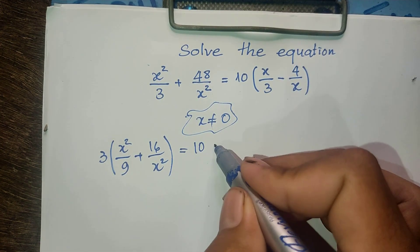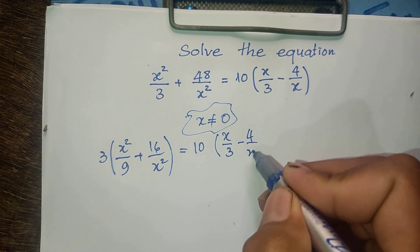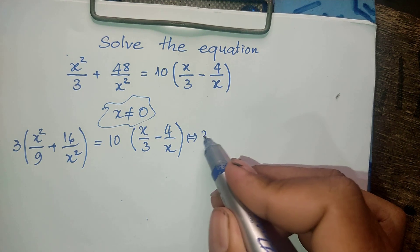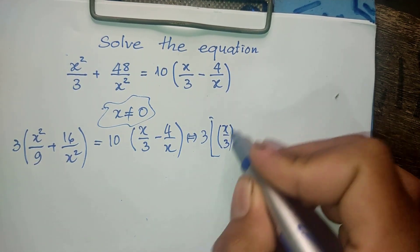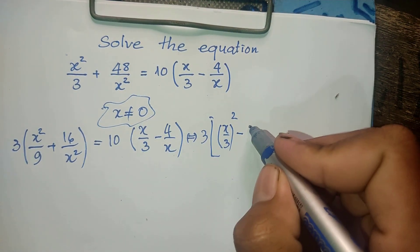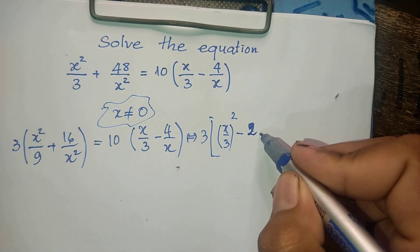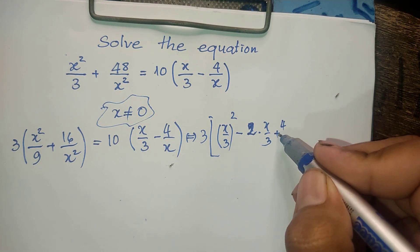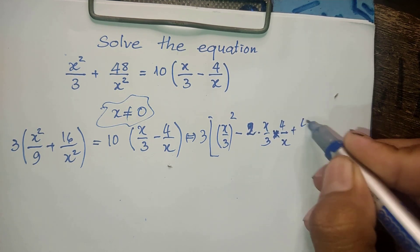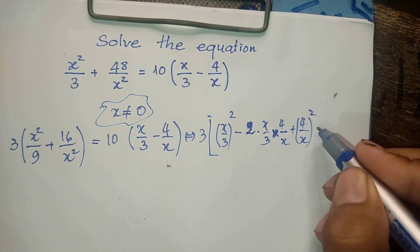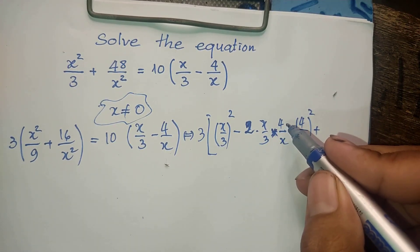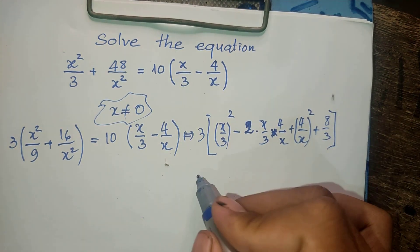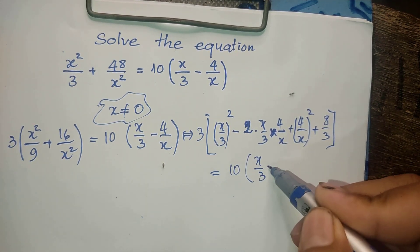And it equals 10 multiplied by x divided by 3, minus 4 divided by x. So I can write it as 3 multiplied by x divided by 3, all squared, minus 2 times x divided by 3 times 4 divided by x, plus 8 divided by 3. We simplify and get 6 plus 8 divided by 3. And this equals 10 multiplied by x divided by 3, minus 4 divided by x.